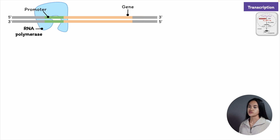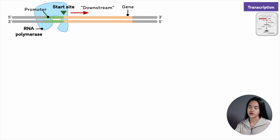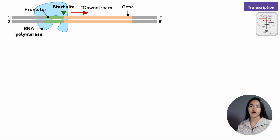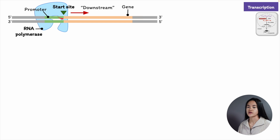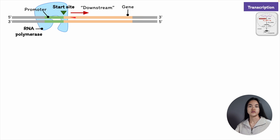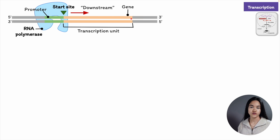Molecular biologists refer to the direction of transcription as downstream, and the other direction as upstream. These terms are also used to describe the positions of nucleotide sequences within DNA or RNA. The promoter sequence is said to be upstream from the starting site of transcription. The segment of DNA downstream from the promoter — the segment being transcribed into an RNA molecule — is called a transcription unit or RNA transcript.